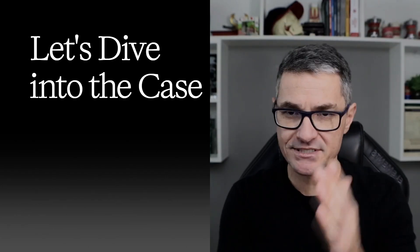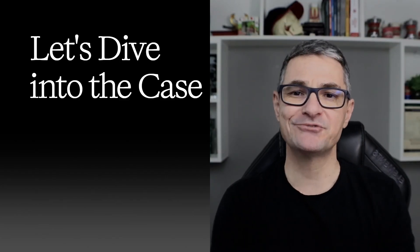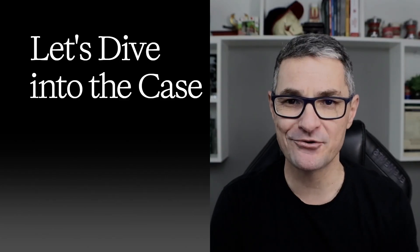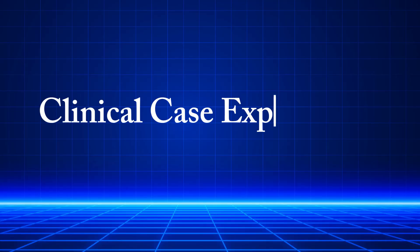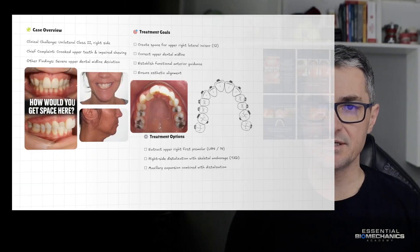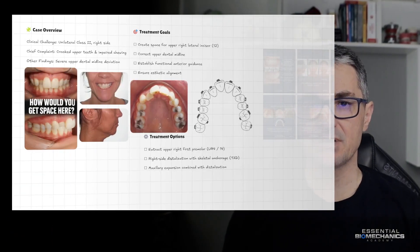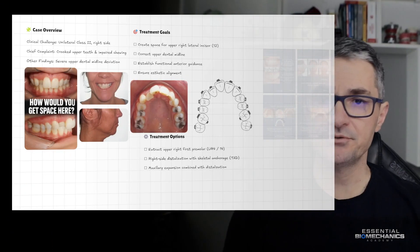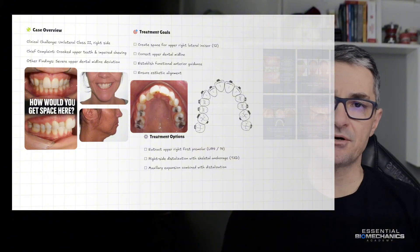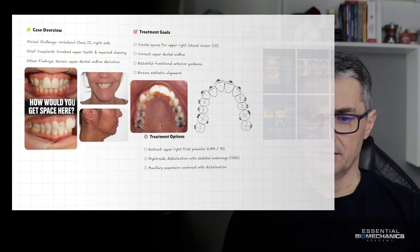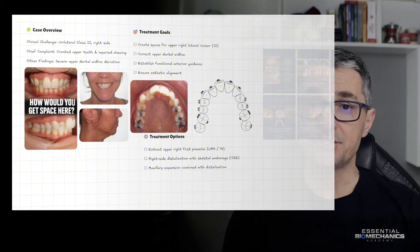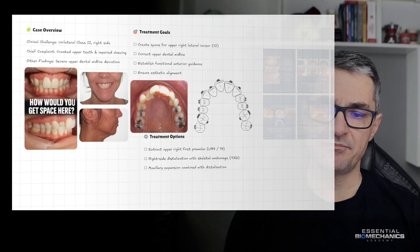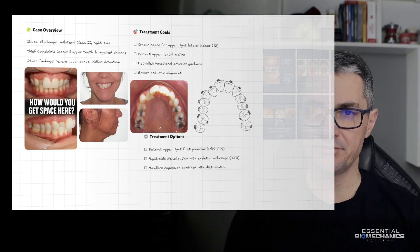So, let's dive into the case. I will show you a logic step-by-step so we can train our clinical thinking together. Let's discuss this interesting clinical case about an adult with a unilateral Class 2 on the right side. Her chief complaint was crooked upper teeth and impaired chewing.